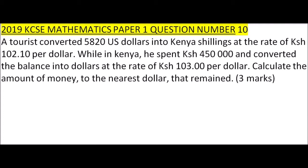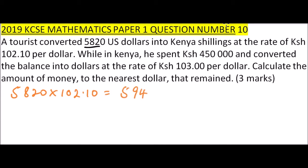With that, if he had $5,820 to convert, you need to multiply the dollars — $5,820 — by the exchange rate, which is 102.10 Kenya shillings. When you multiply that, this should give you 594,222 Kenya shillings.